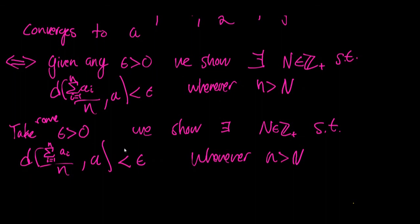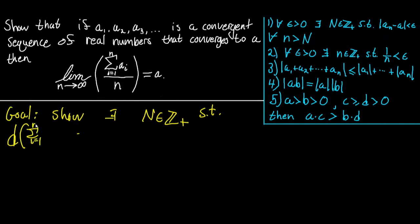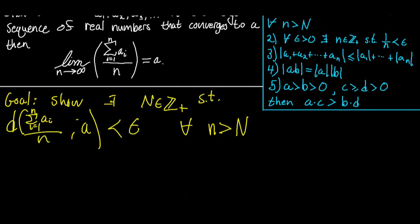Our goal is: show that there exists a positive integer N such that the distance between the sum from i equals 1 to n of the aᵢ's all over n, and a, is strictly less than epsilon for all n strictly greater than N.